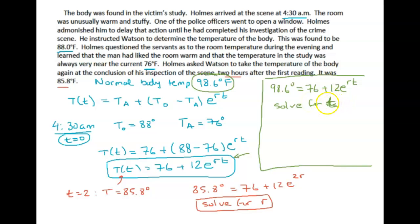This will give you a negative number, but that's because it happened before 4:30 a.m. So whatever negative number you get for that t, you have to subtract that time from 4:30 a.m., and that will tell you when the murder happened. This will tell you when he was killed.